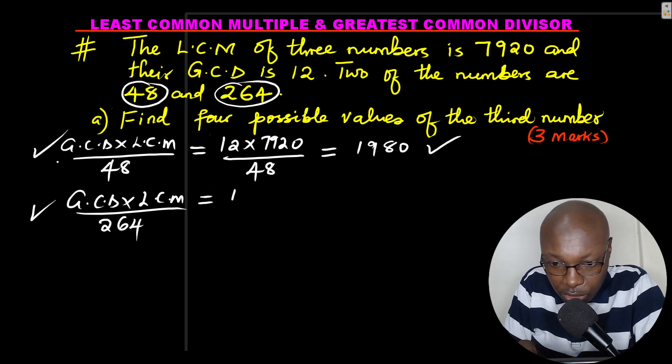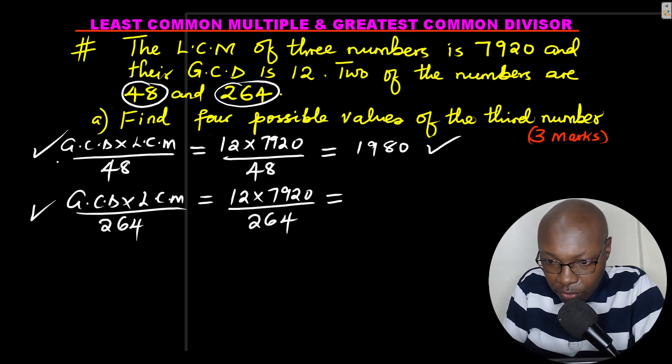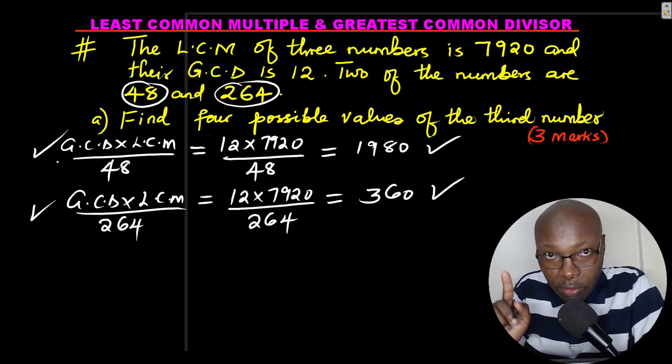So this will give GCD, which is 12, multiplied by 7920, divided by 264. Working this out using a calculator, 12 times 7920, divided by 264. This will give 360. 360, the second possible value of that number.